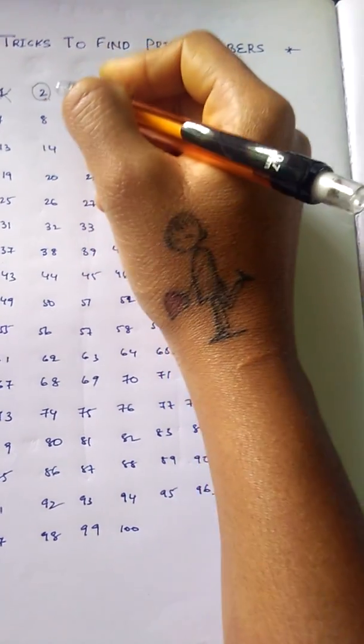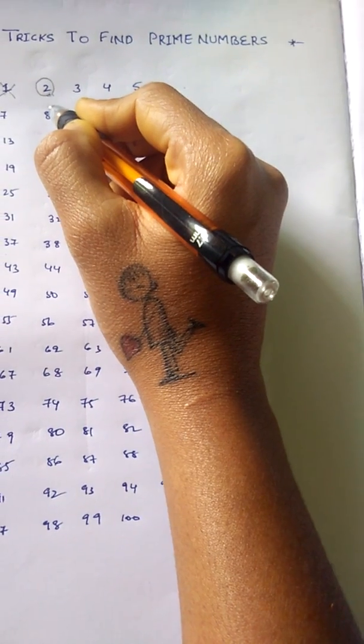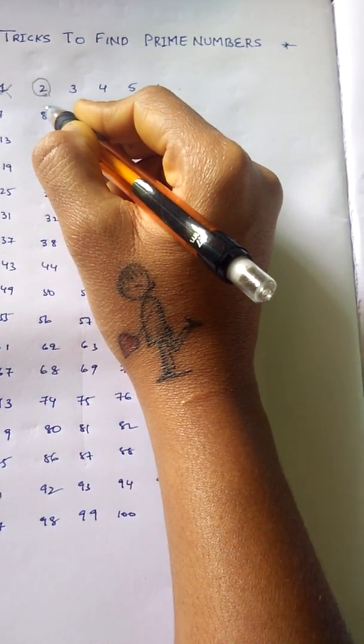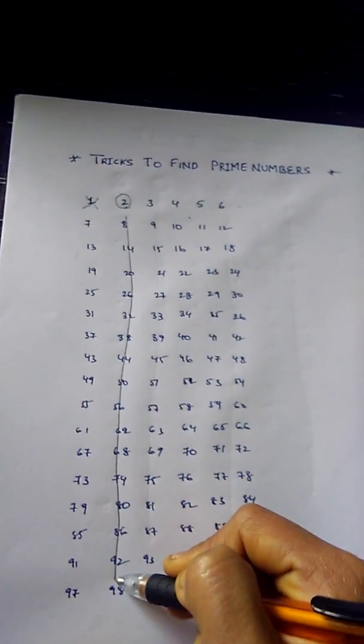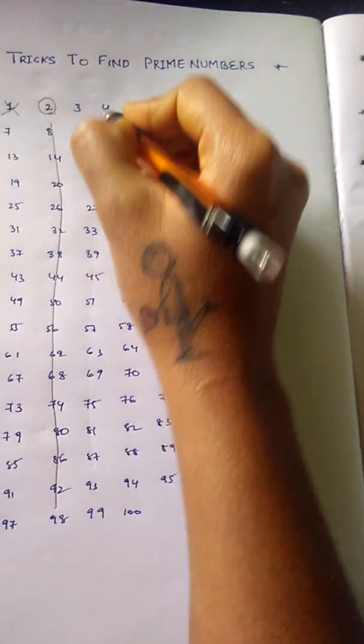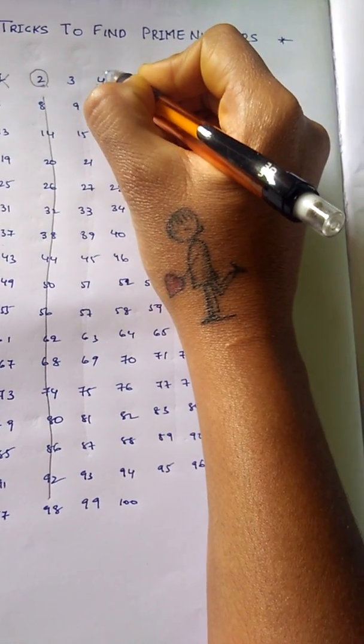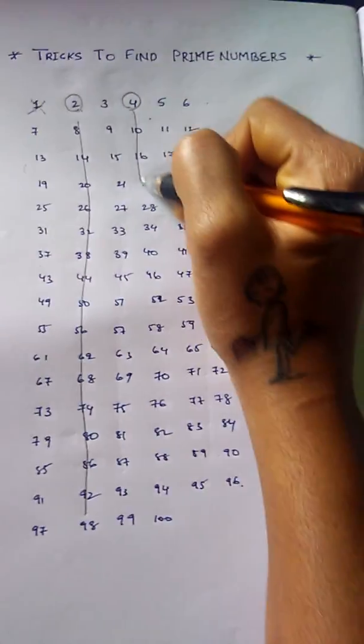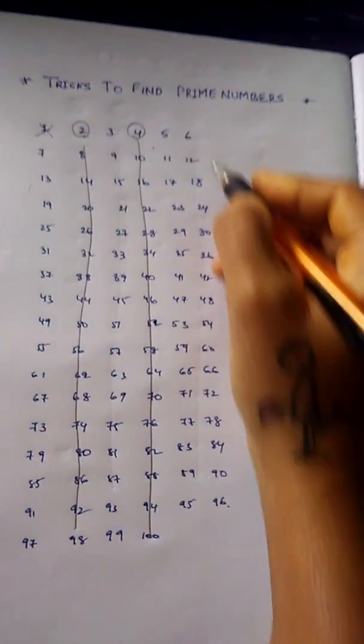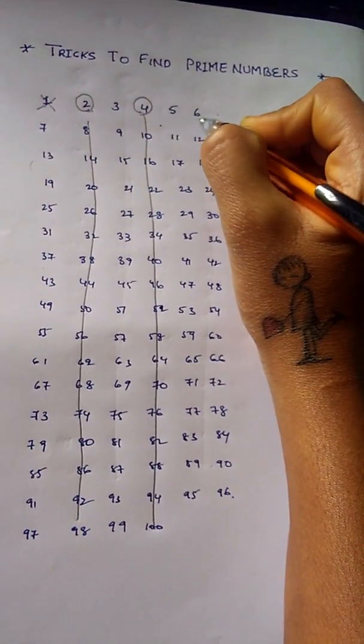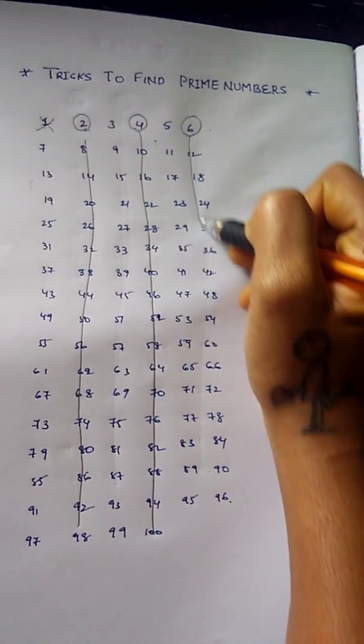We strike off all these numbers in this column because all these numbers are even numbers and divisible by 2. Similarly, 4 is divisible by 2, so we strike off all these numbers which occur in this column as well. Similarly, 6 is divisible by 2, we strike off all these numbers in this column also.